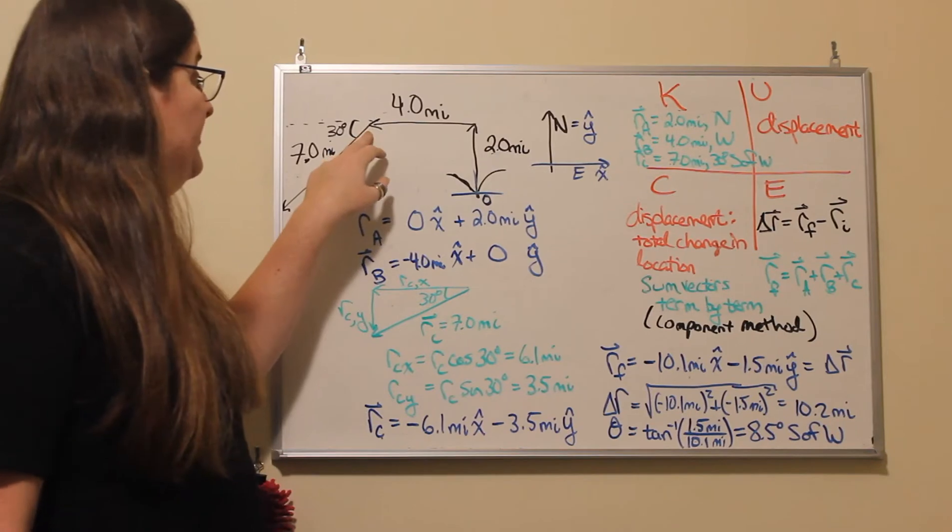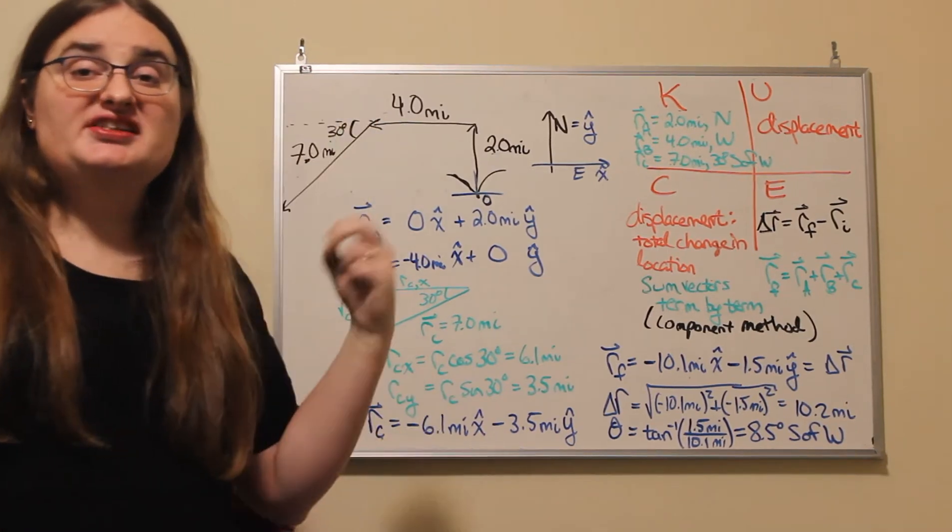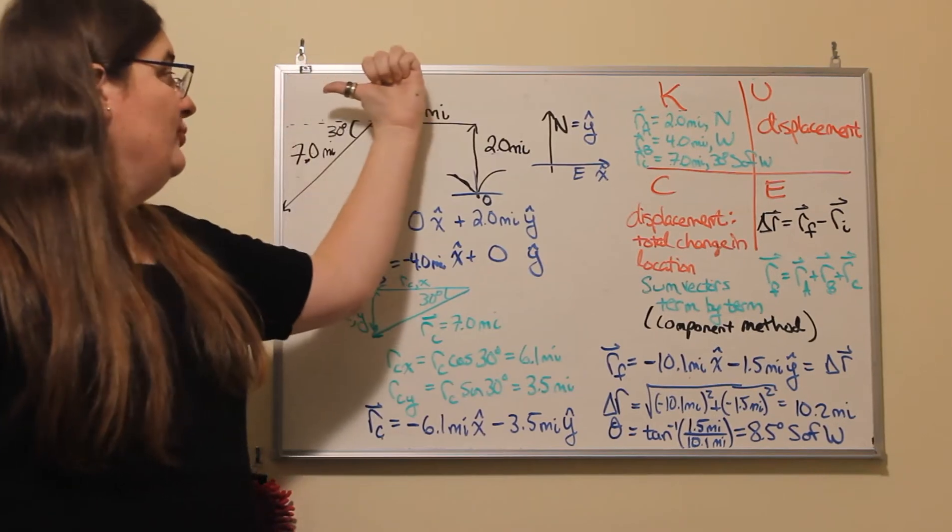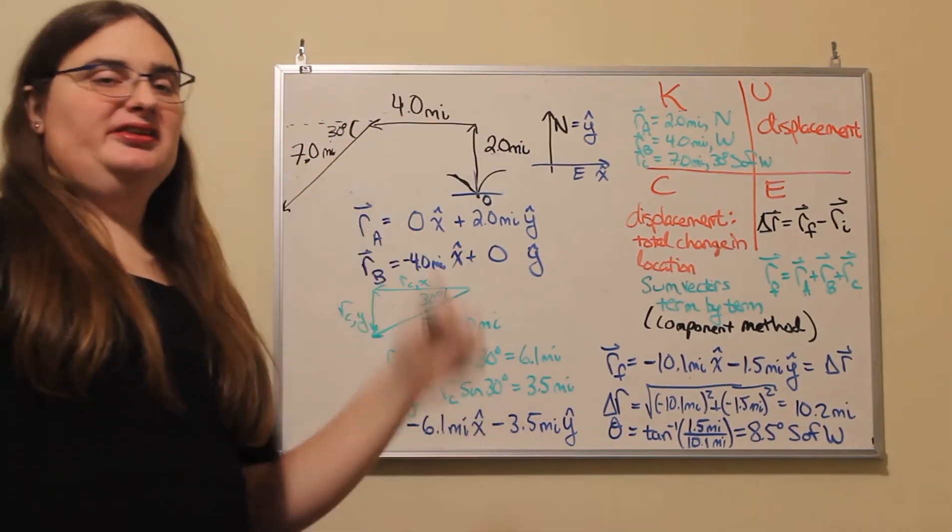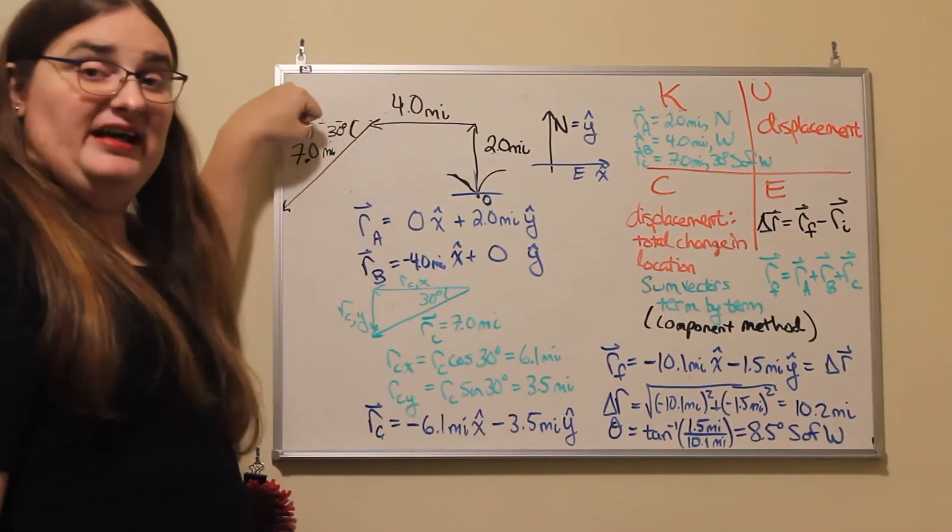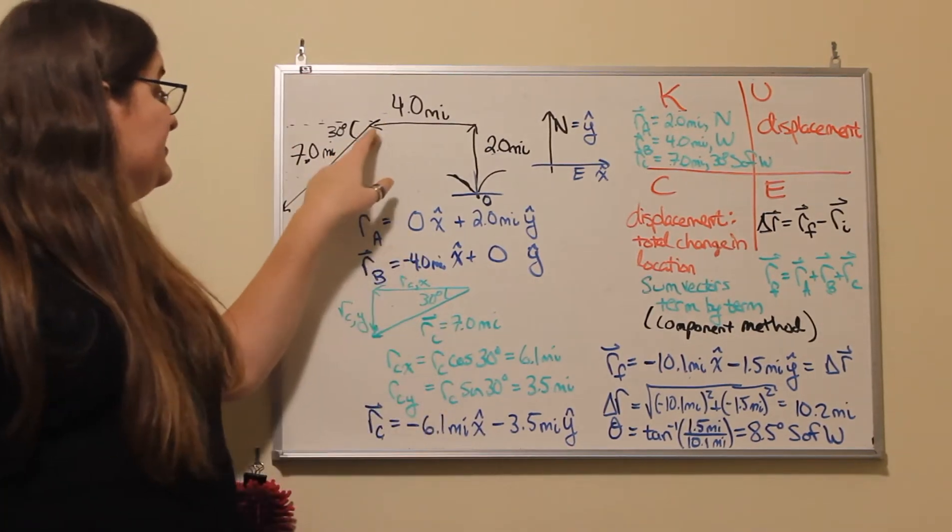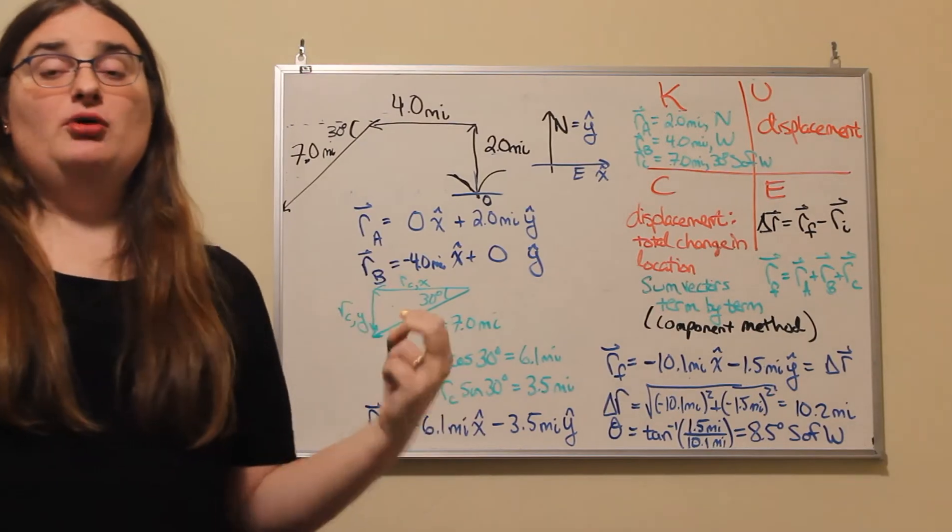And finally, the bird turns 30 degrees south of west. So if we continue facing west, turn towards the south, we'd be going to the left and down as I've drawn it on the board, a distance of 7.0 miles.